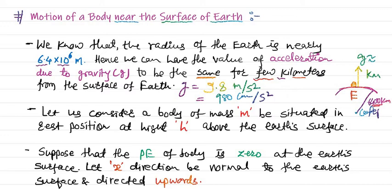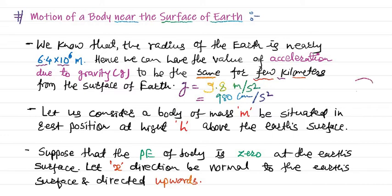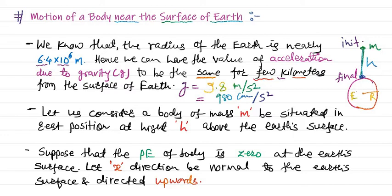Let us consider a body of mass m which is raised above the earth surface. This is the earth surface. The body of mass m is at a certain height h, and it is falling from that point — the initial point — down to the earth surface, which is the final point. So initially the body is at rest at height h above the earth surface.